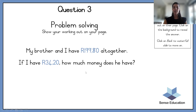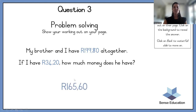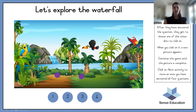My brother and I have 199 rand 80 cents all together. If I have 34 rand 20 cents, how much money does he have? The answer is 165 rand 60 cents. Remember to show your working out — how did you get to that? Don't just write the answer; I need to see the method. Maybe you draw pictures, maybe you write numbers — however you want to get to the answer is perfectly fine. It's a tiger, looks like he's calling towards us.